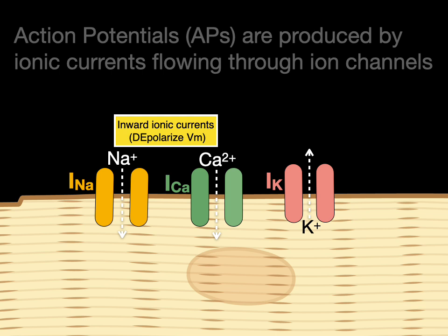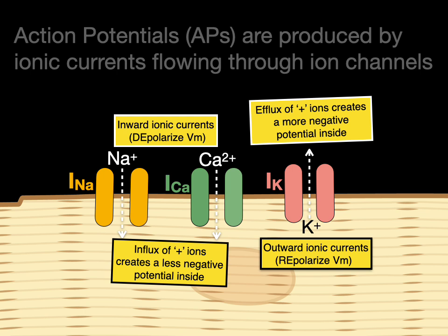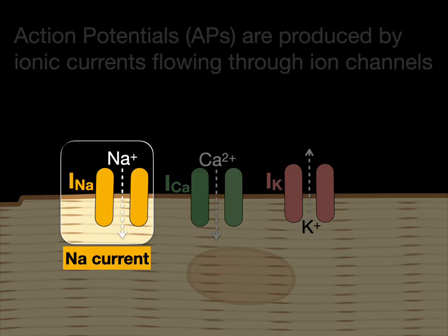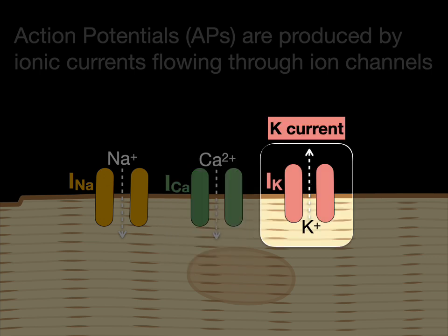Here are some ions and here are their doors — the ion channels. When they're open, we have the flow of ions through these ion channels. These currents are what produce an action potential. Inward ionic currents depolarize the VM — it's the influx of positive ions that creates a less negative potential inside the membrane. The outward ionic currents repolarize the VM — that's an efflux of positive ions, potassium, that creates a more negative potential inside. The letter I stands for current. So INa means the sodium current caused by a sodium channel; ICa is the calcium current through a channel specific for calcium; IK is the potassium current for the outward movement of potassium.